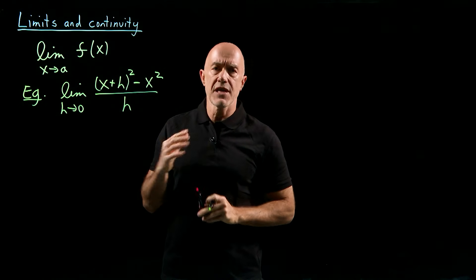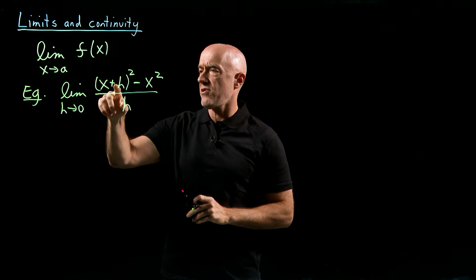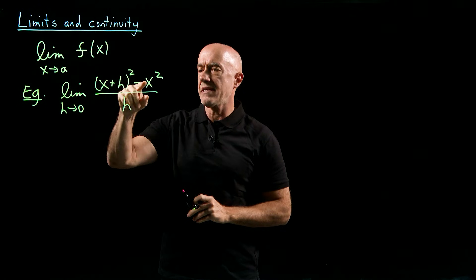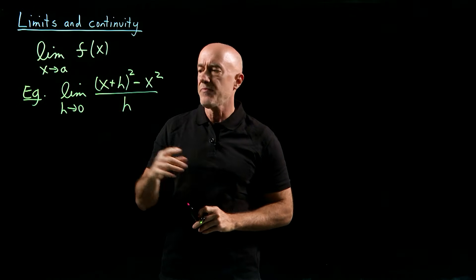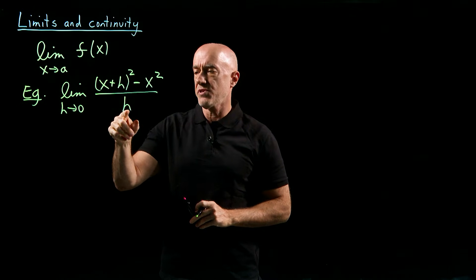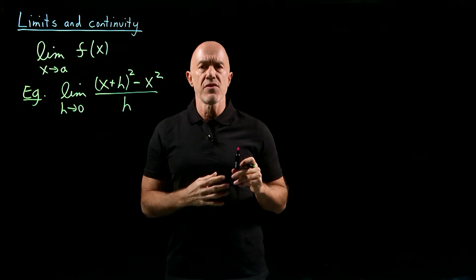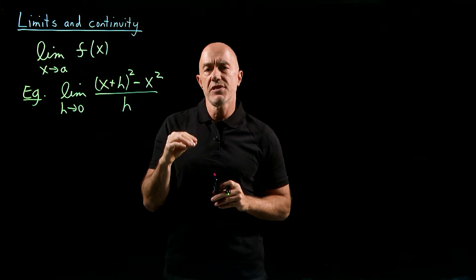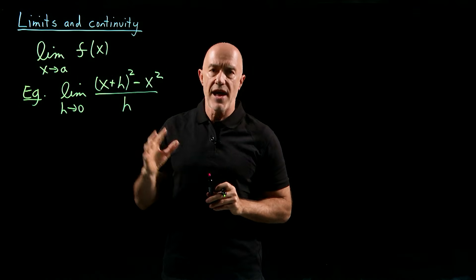If we just try to substitute in h equals 0, we would get x² minus x², which is 0, divided by h, which is 0. So we get 0 over 0, which is an indeterminate limit, an indeterminate fraction.